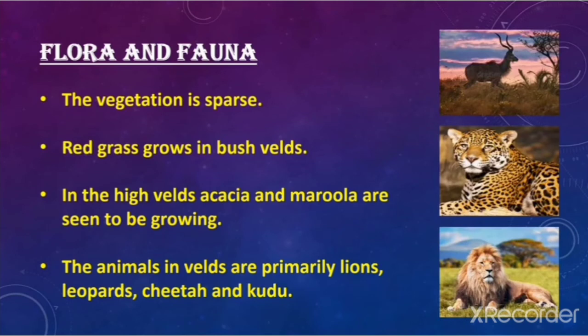Flora and fauna of velds: the vegetation is sparse. Red grass grows in bushvelds. In the high velds, acacia and marula trees are seen. The animals in the velds are primarily lions, leopards, cheetahs, and kudu.